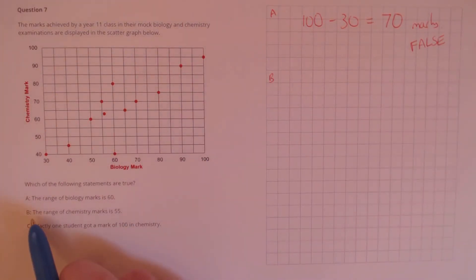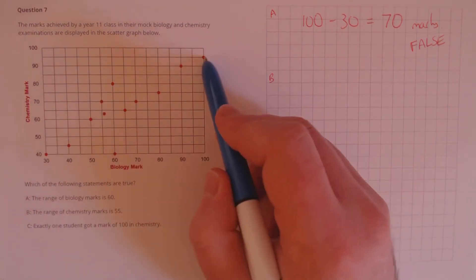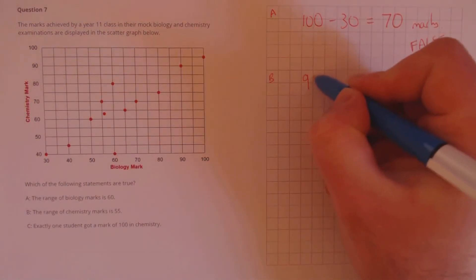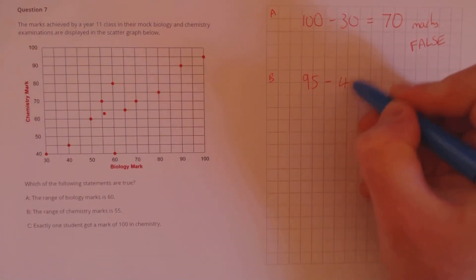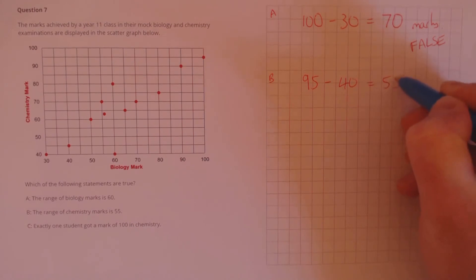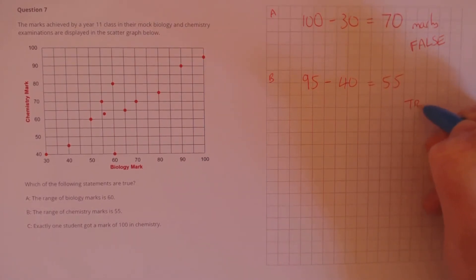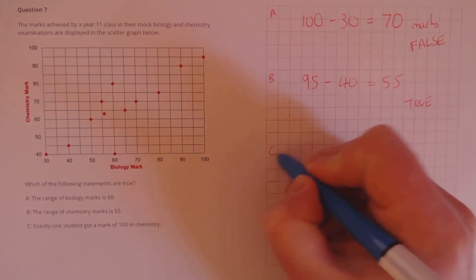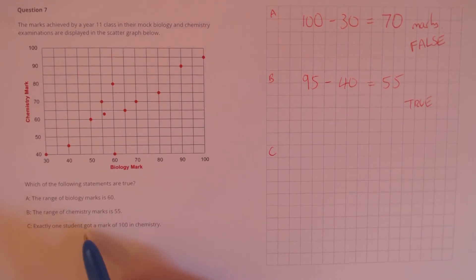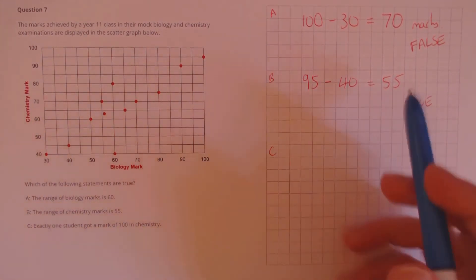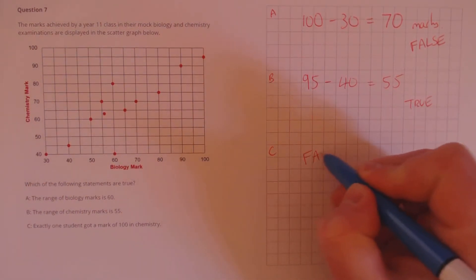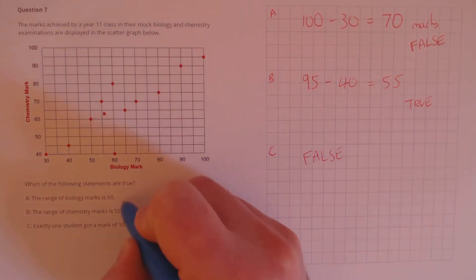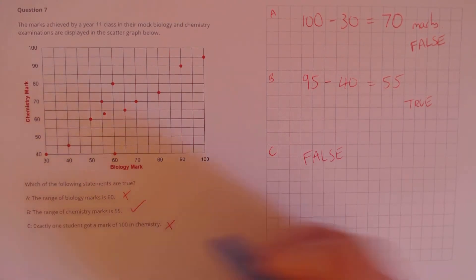For statement B, the range of chemistry marks is claimed to be 55. The highest chemistry mark is 95 and the lowest is 40; 95 minus 40 equals 55, so that's true. Finally, statement C claims exactly one student got a mark of 100 in chemistry — but we know the highest chemistry mark was 95, so that's clearly false. Our answers: false, true, and false.